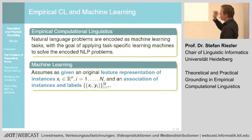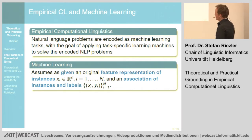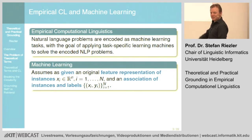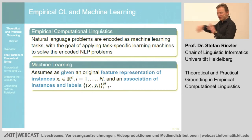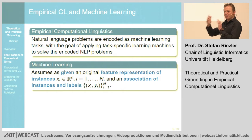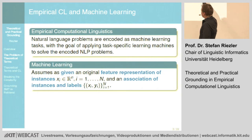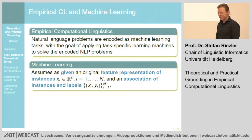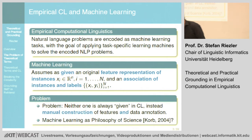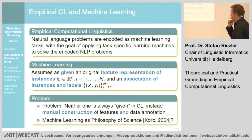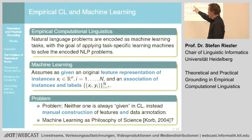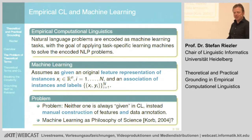Machine learning assumes that if you want to use those tools and solve those problems, you are given a representation of instances. The instances are known as vectors. Your world consists of a vector representation of instances and an association of instances and labels. But in computational linguistics, that's not always true. It's not always true that you can start with a feature representation of instances.